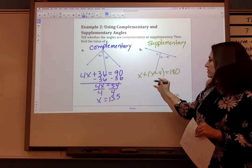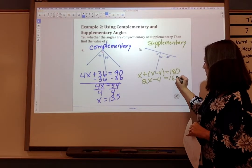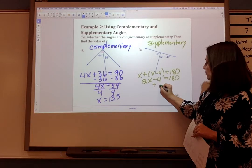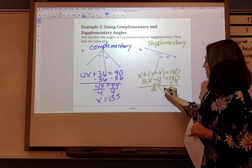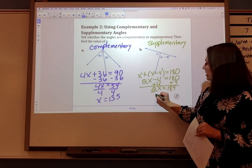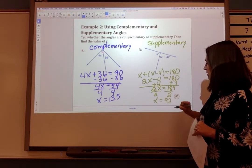Now I can combine my like terms. That gives me 2X minus 4 equals 180. I'll go ahead and solve my two-step equation. Add 4 to both sides. I get 2X equals 184. Then I'll divide by 2 on both sides and get X equals 92.